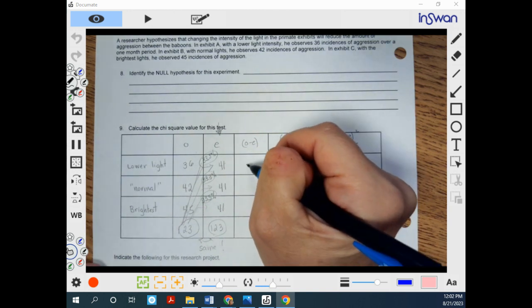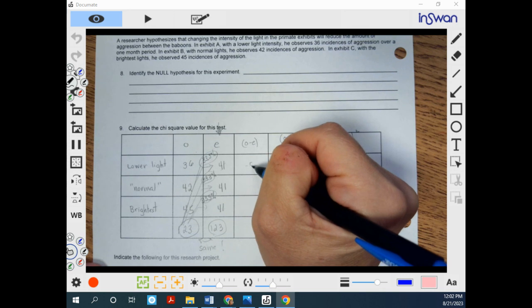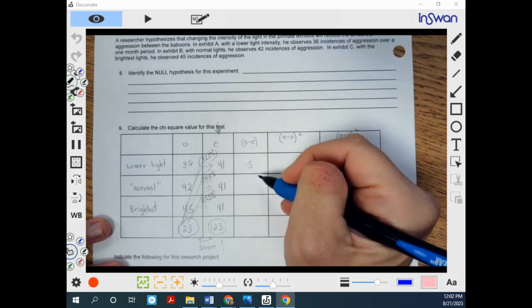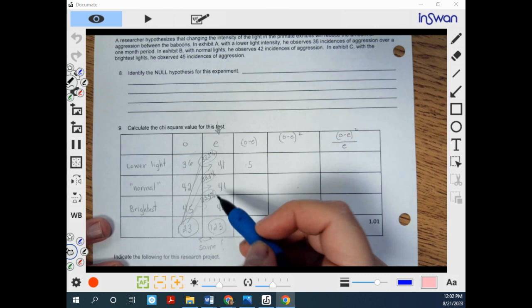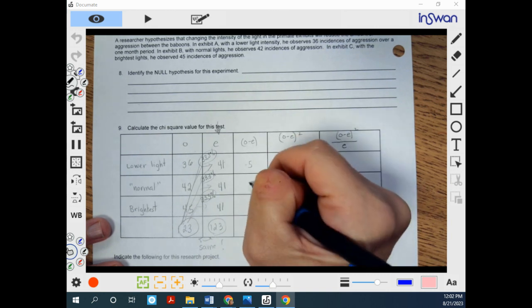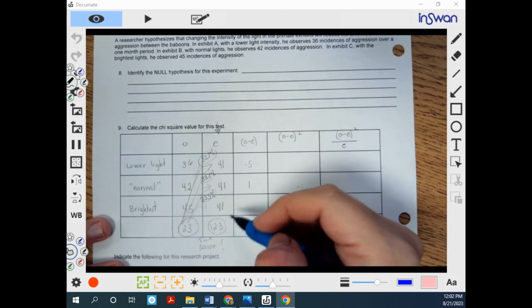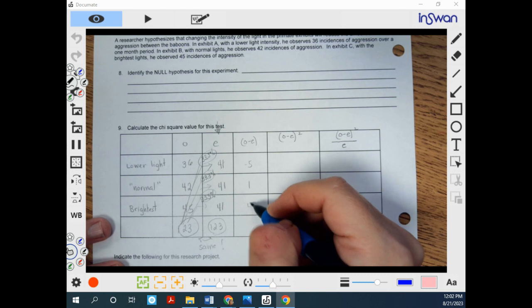So when we subtract O minus E, that gives us a negative 5. Again, we're going to square it here and that's going to disappear. We have the difference between 42 and 41. It's 1. 45 minus 41 is 4.